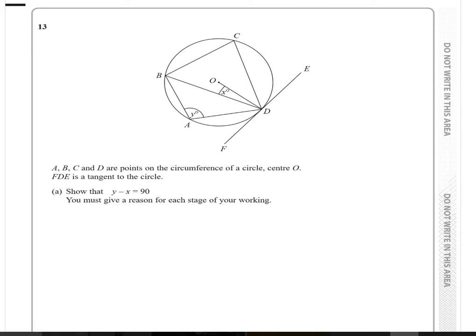We've got points A, B, C, D on the circumference of the circle, and we've also got centre O, and FDE which is the tangent of the circle. We're asked to show that Y minus X is equal to 90.